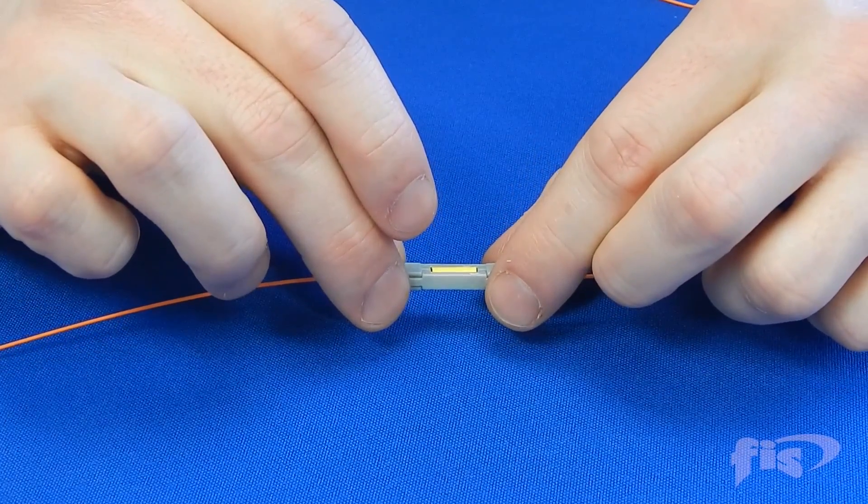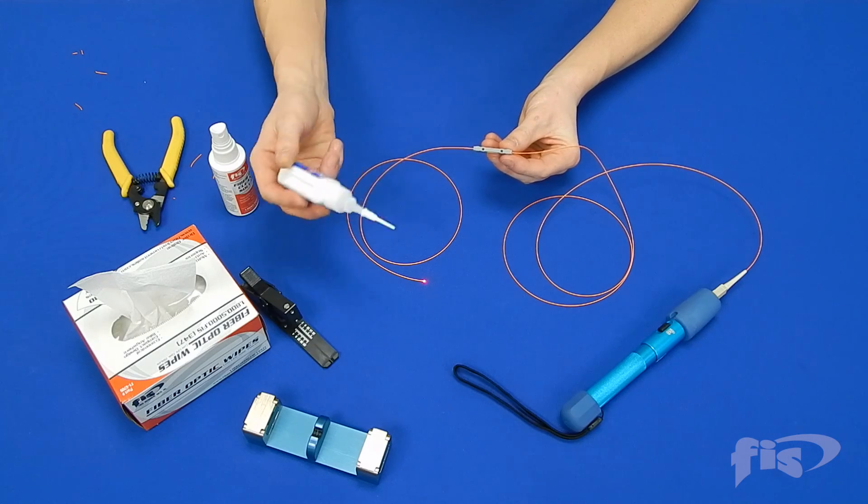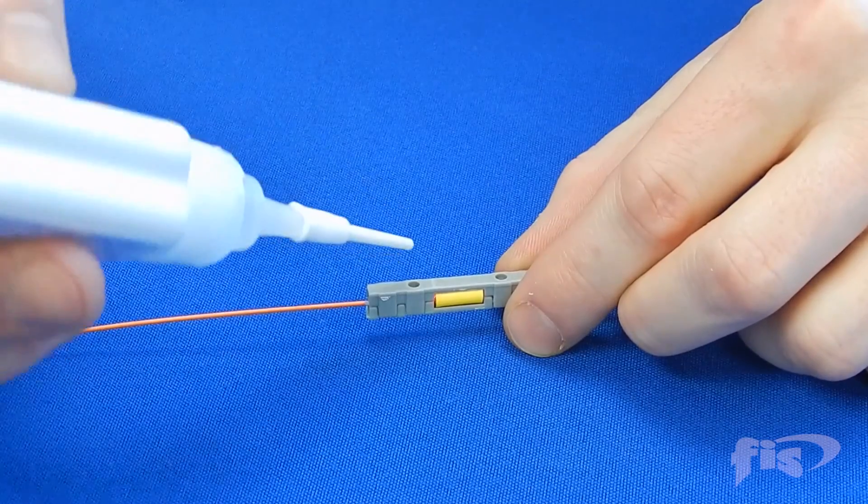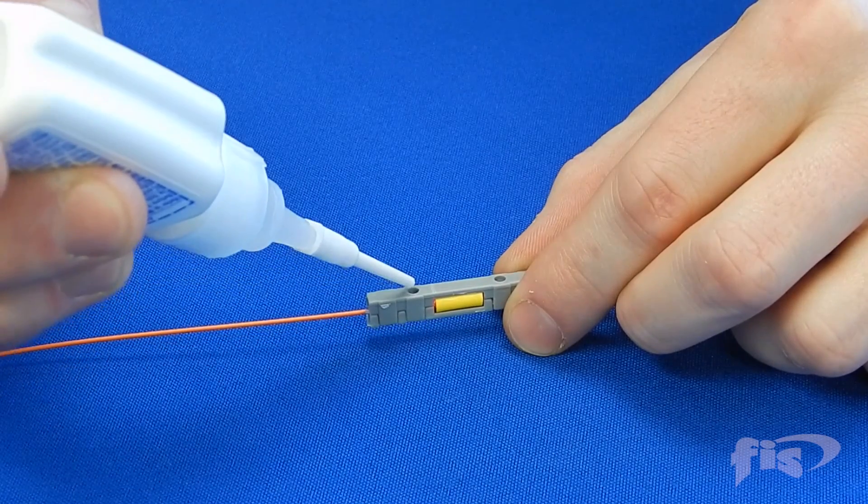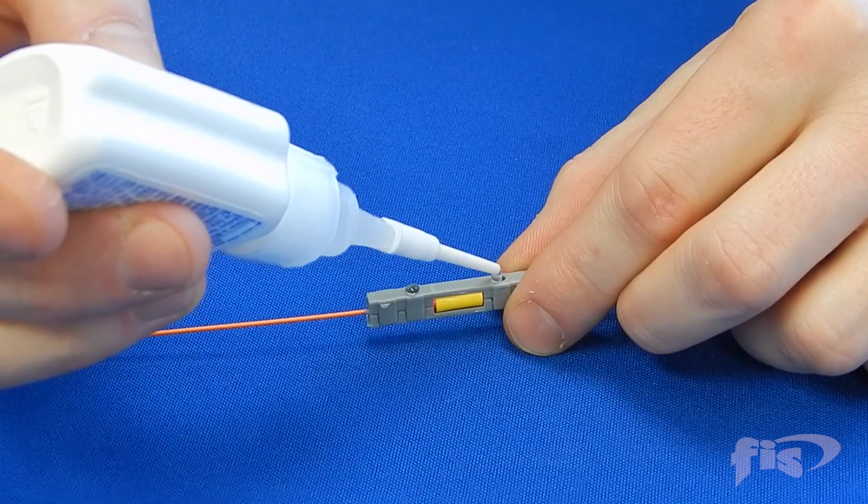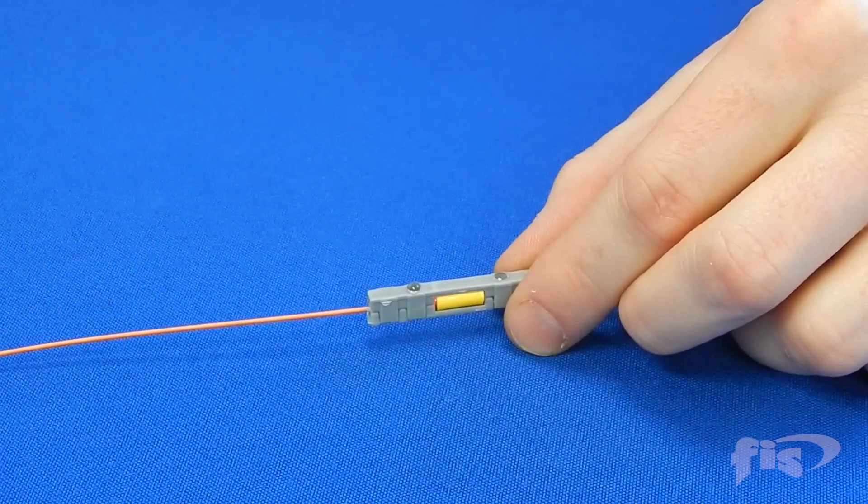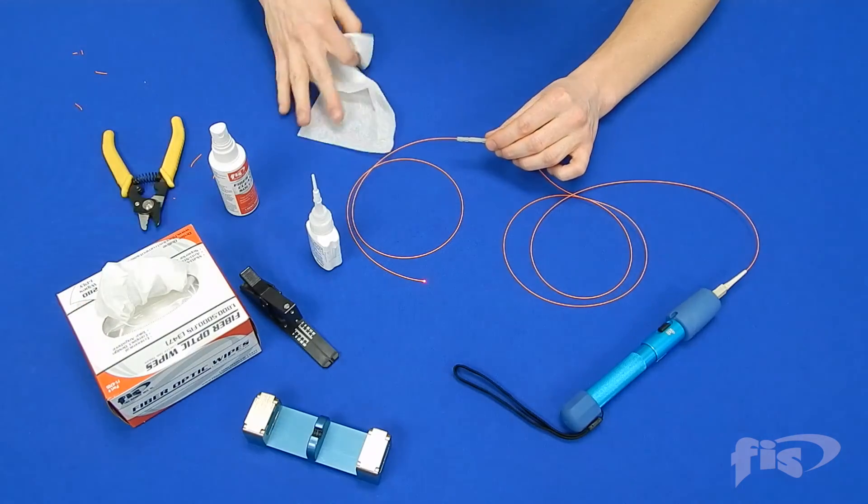To make the splice permanent and improve pull strength, add a drop of fast-cure epoxy in each of the epoxy holes. Wipe away excess epoxy.